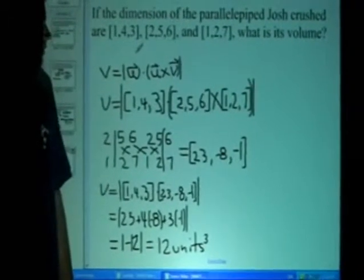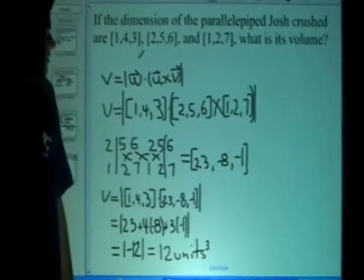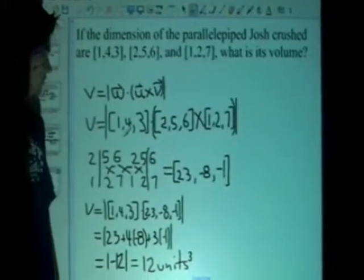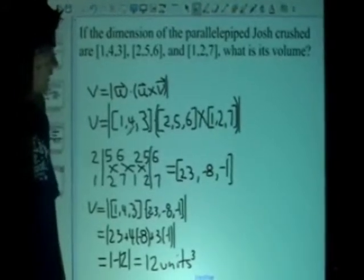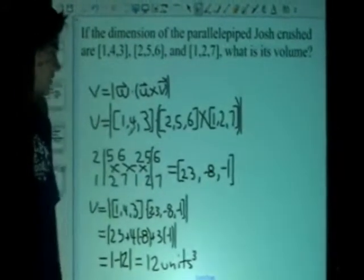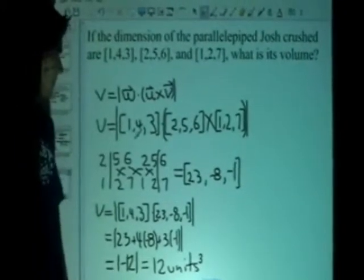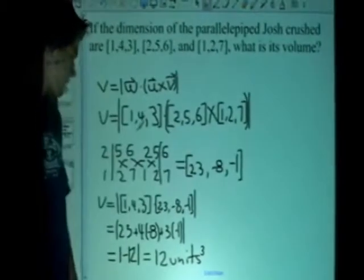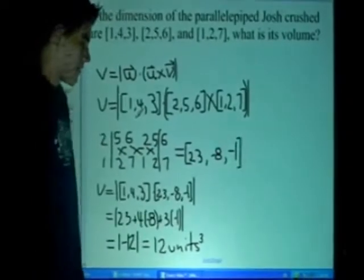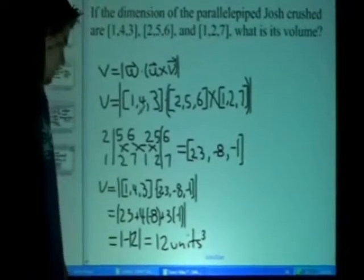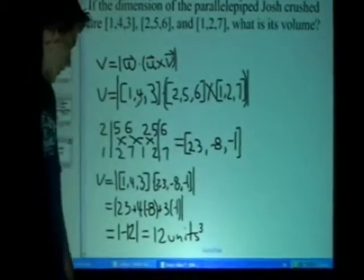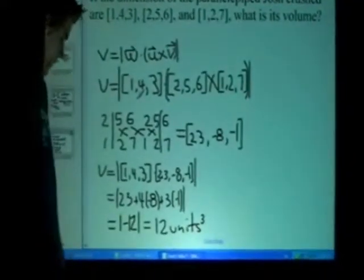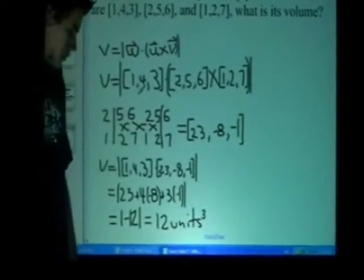If the dimensions of the parallelepiped with Josh crushed are 1, 4, 3, then 2, 5, 6, and 1, 2, 7, what is its volume? Volume equals the magnitude of the cross product of two vectors and the dot product of the other vector, and it doesn't matter which order you put those in. So you substitute the values in respectively and you take the cross product of these two vectors, and that equals 23, negative 8, and negative 1. And then you take the dot product of w and this value, which gives you 23 plus 4 times negative 8 plus 3 times negative 1, which is the absolute value of negative 12, which equals 12 units cubed.